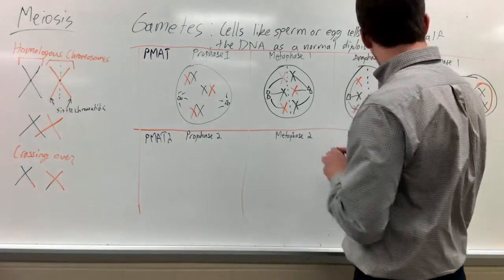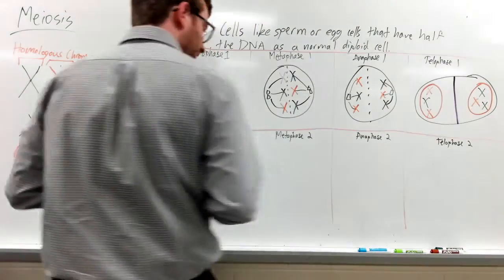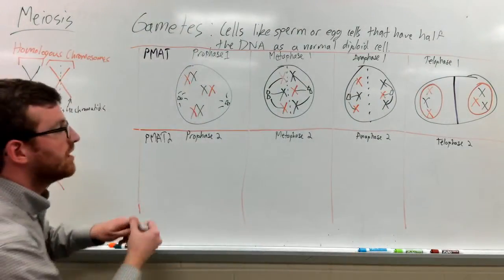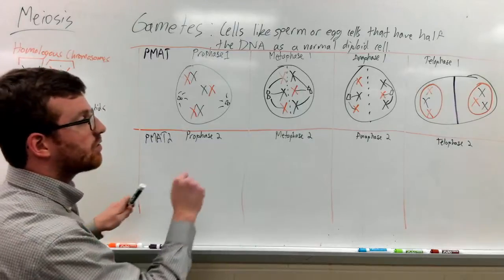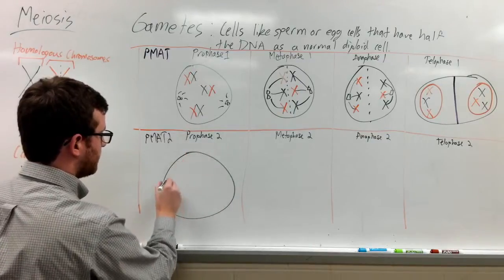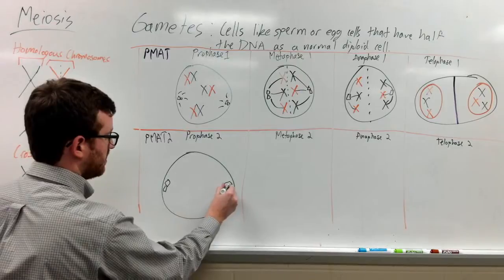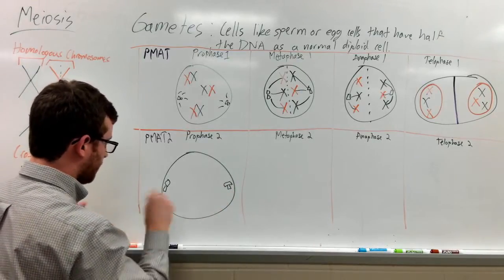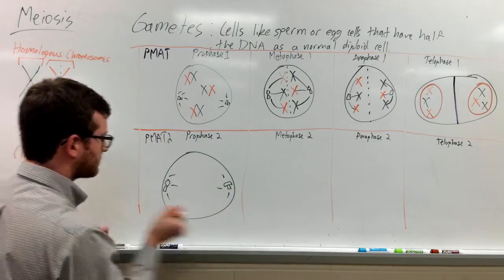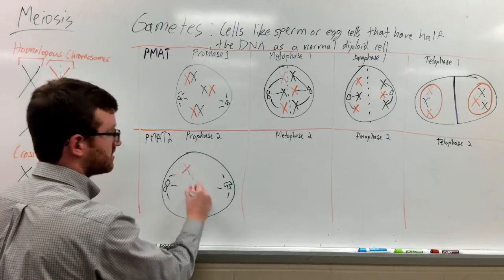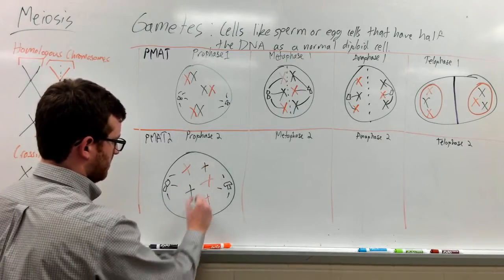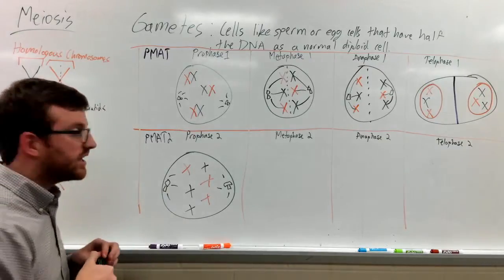Now you're going to go to prophase two, which is actually going to be similar to the prophase in mitosis. We're going to focus on just one of these two cells. You have the centrioles and spindle fibers starting to form. The chromosomes are starting to form again, and the nucleus is gone.